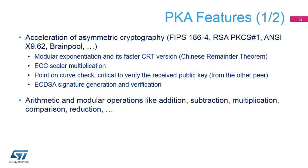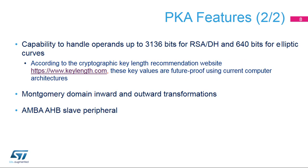Additional operations include inversion and Montgomery multiplication. Thanks to these operations, the PKA supports many standard public key algorithms: modular exponentiation, CRT exponentiation, RSA cryptography, Elliptic Curve Cryptography (ECC), Digital Signature Algorithm (DSA), and Elliptic Curve DSA (ECDSA). The PKA is used to accelerate RSA, Diffie-Hellman (DH), and ECC over prime field operations. Supported operand sizes are up to 3,136 bits for RSA and DH, and up to 640 bits for ECC. The PKA is an ARM AMBA AHB slave peripheral accessible through 32-bit word single accesses only; otherwise, for writes, an AHB bus error is generated and write accesses are ignored.